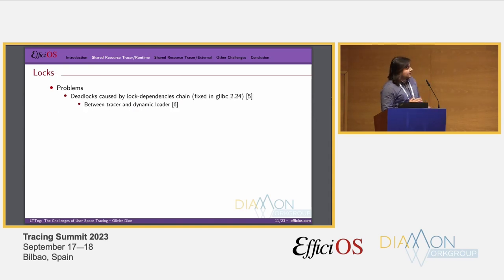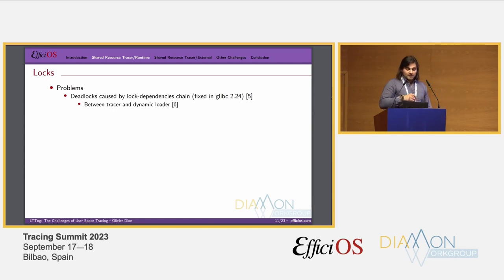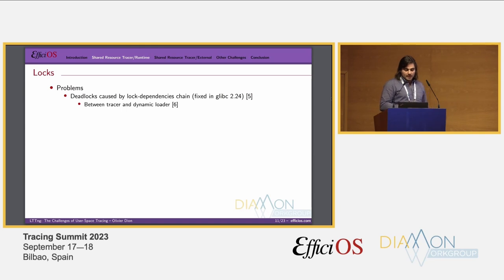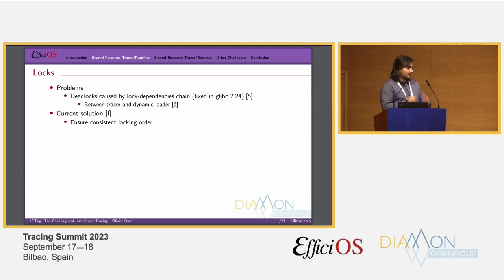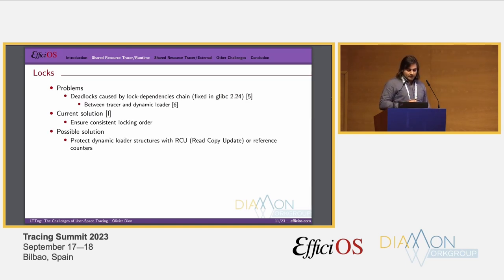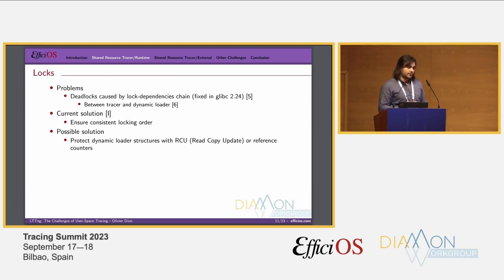For locks, we had a specific case in LTTNG where there was a deadlock caused by a dependency chain — an inverse locking order between the tracer and the dynamic loader. This was recently fixed in glibc due to that issue. The current solution is to ensure consistent locking orders, which required some cumbersome logic. A possible future solution is to protect dynamic loader structures with RCU — not relying on locks to prevent deadlock, or using reference counters for those structures.